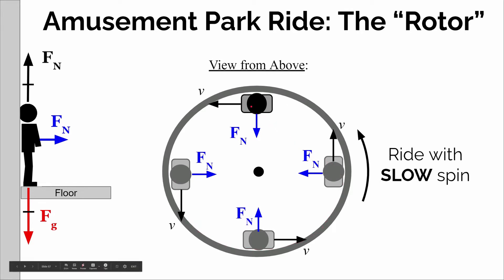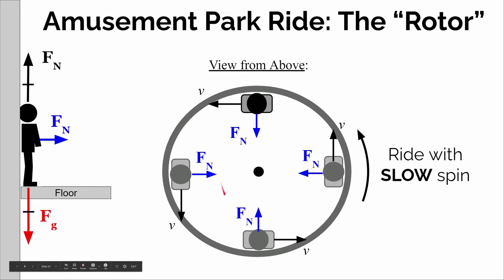Once it starts spinning and you have some tangential velocity — at any given instant you're moving to the right, then moving up, then moving to the left. Your body wants to follow a straight line path at a constant speed unless there's a net force on you. So when you're on this ride, if your body wants to go straight, you're continually running into the wall against your back, and the wall will continually be pushing inward with a normal force towards the center of the circular path. That's going to be the net force on you during circular motion.